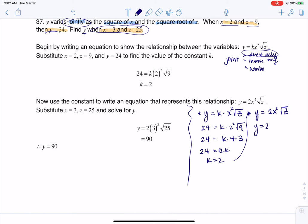So y will equal 2 times—my x was 3, so I'll square that number—and then I'll take the square root of 25. So I get 2 times 9, and the square root of 25 is 5. I'm going to combo these two first: 2 times 5 is 10, 10 times 9 is 90. That's where I'm getting that my y value is 90.